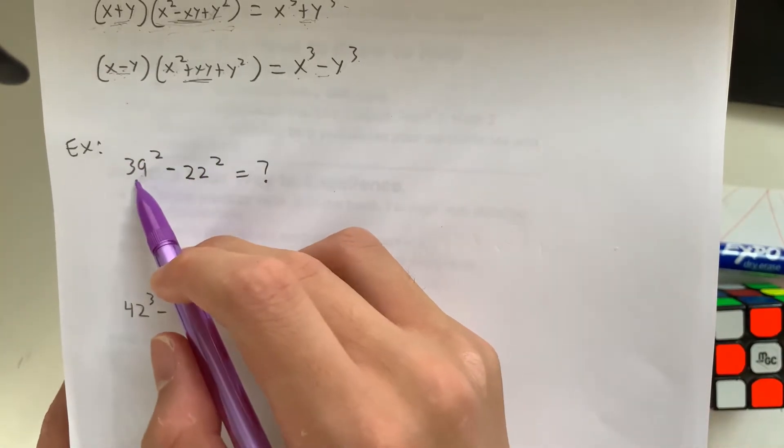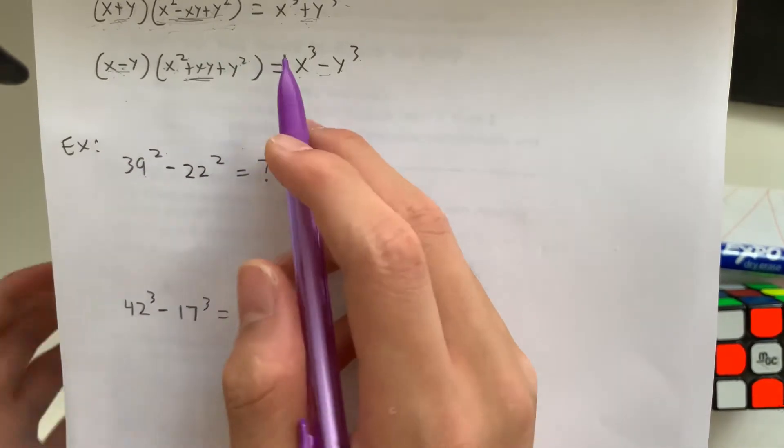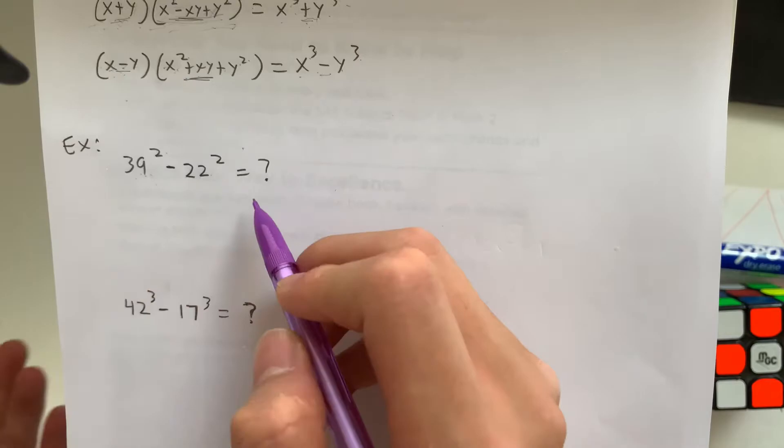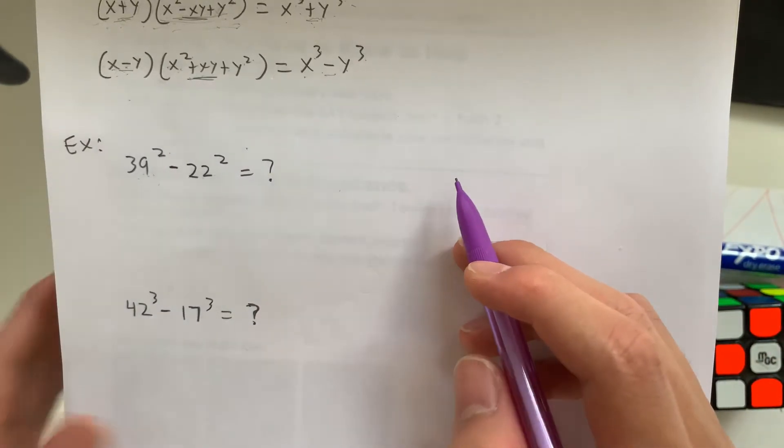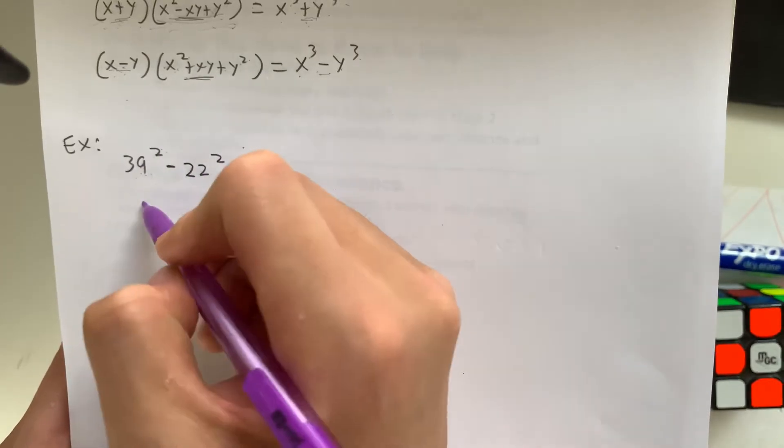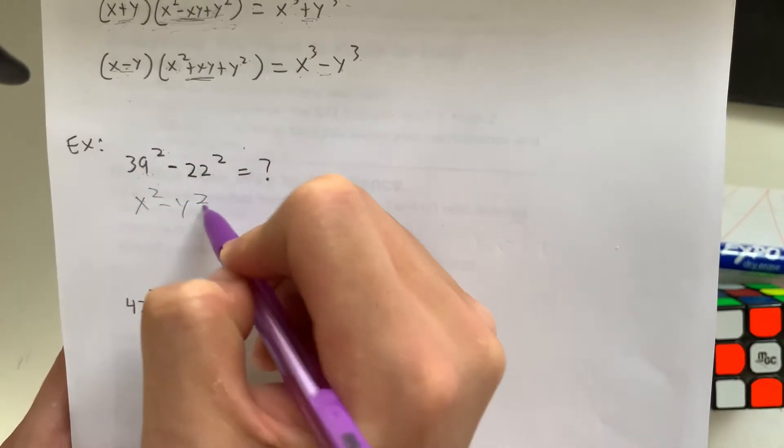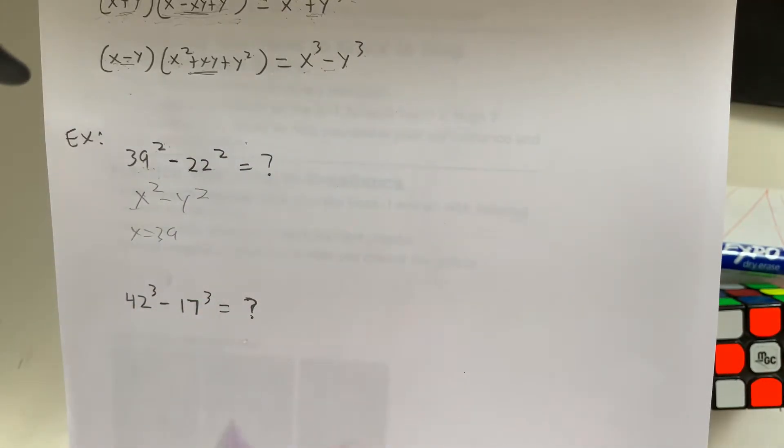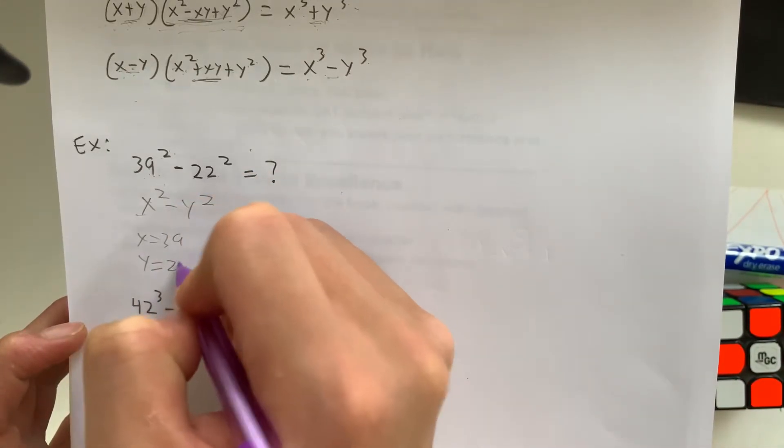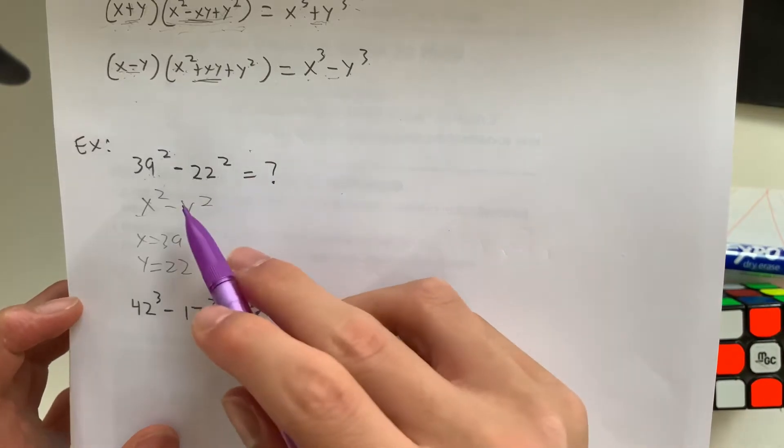So how are we going to do 39 squared minus 22 squared? You could just multiply out and subtract there, but an easier way is to know the difference of squares. So what does this look like? It looks like x squared minus y squared, where x equals 39 and y equals 22.